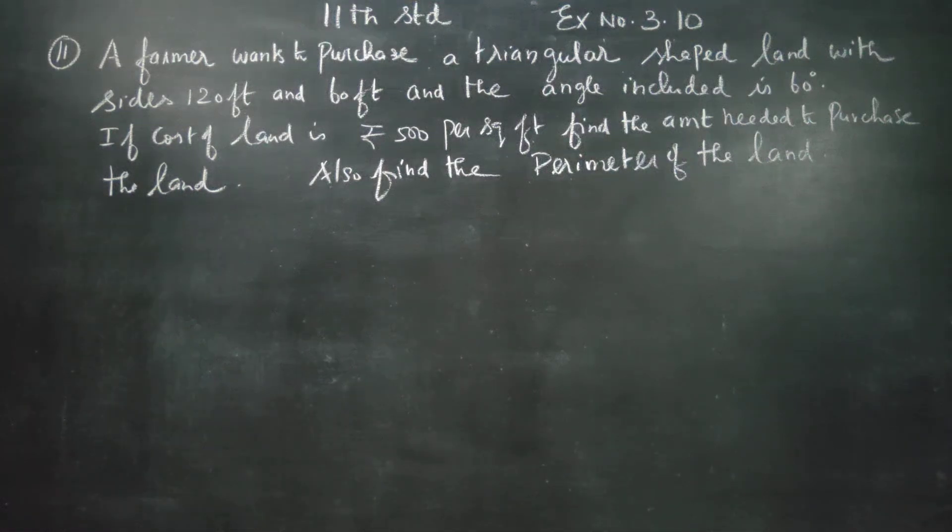Hello 11th standard students. In sum number 11, exercise number 3.10, a farmer wants to purchase a triangular shaped land.